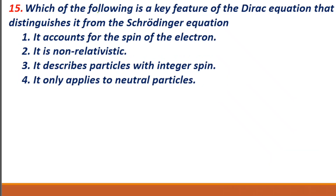Next, question fifteen: which of the following is a key feature of the Dirac equation that distinguishes it from the Schrödinger equation? The Dirac equation describes spin-half particles, so it accounts for the spin of the electron. So, one is your correct option.